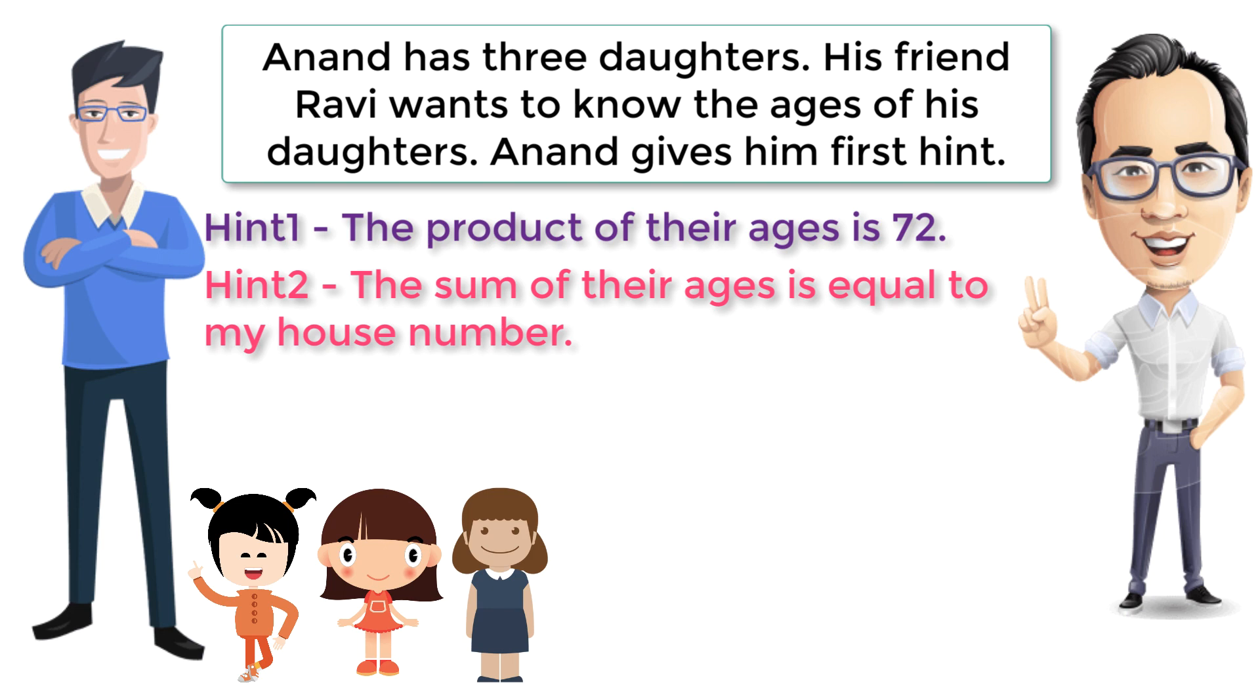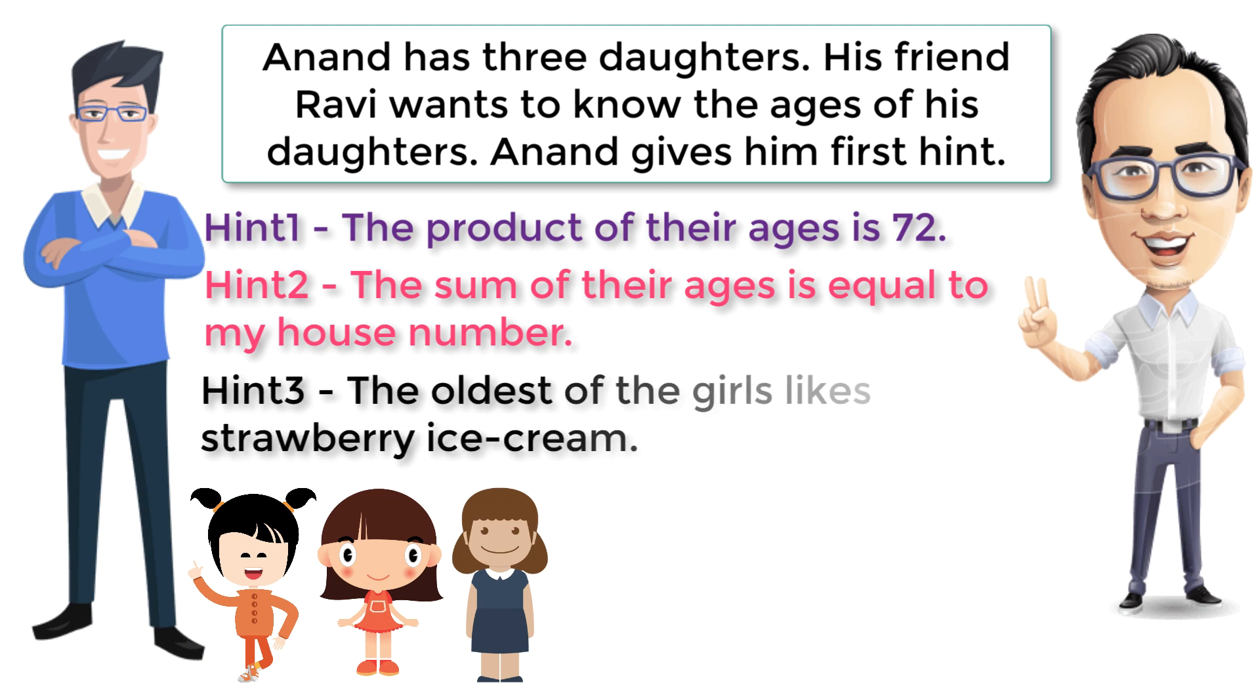Ravi goes out and looks at the house number and tells, 'I still do not have enough information to determine the ages.' Anand admits that Ravi cannot guess with these hints, and then he gives him the third hint.